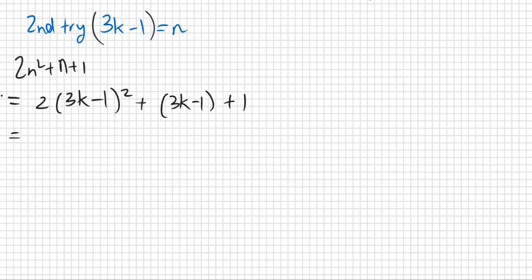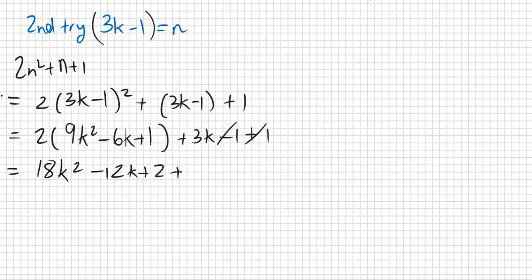They're pretty lenient on making silly mistakes in the proofs here. They just want you to try out different options of integers. So 2 times (9k² - 6k + 1) + 3k - 1 + 1. That cancels out. Timesing the 2 in: 18k² - 12k + 2 + 3k. Add like terms: 18k² - 12 + 3 is -9k + 2.